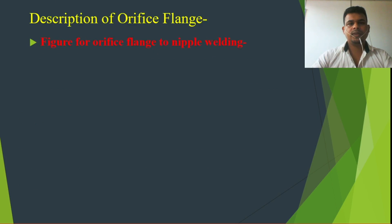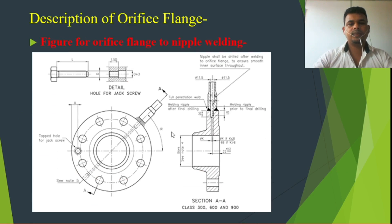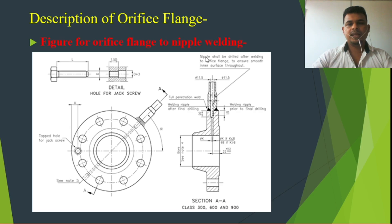Regarding the nipple welding for orifice flanges: in an orifice flange we have two tap holes. From these two tap holes we usually use one side — here we weld a nipple to connect the tubing and to connect to the orifice meter. On the other side we normally put a hexagonal plug or threaded screw to seal it. The welding here requires full penetration welding.